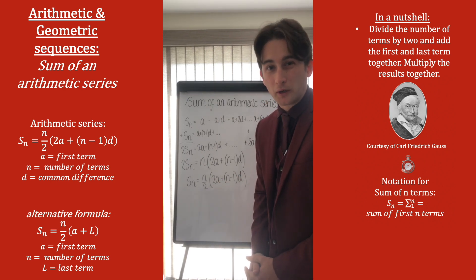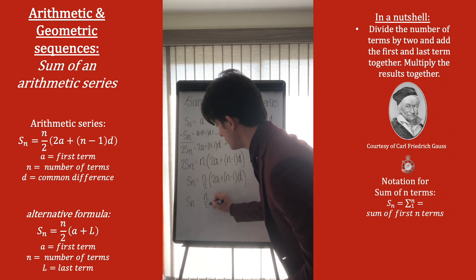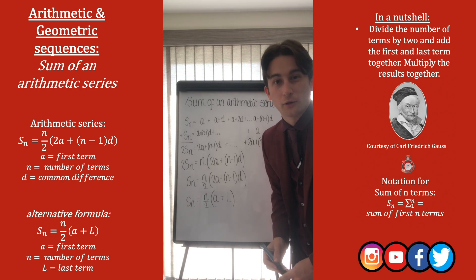And as we mentioned previously, 2A plus (N minus 1)D is the first term plus the last term. So the other form of the sum can be given by N over 2 times (A plus L), where L denotes the last term.